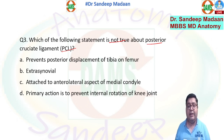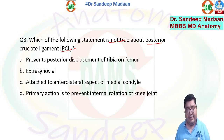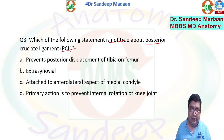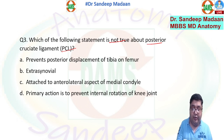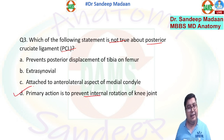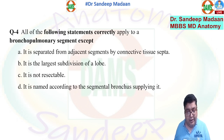Choice A — it prevents posterior displacement of the tibia — is true. Choice B — extra-synovial — is also true; it is intracapsular but extra-synovial, attached to the medial aspect of the lateral condyle of the femur, which is also true. The statement that its primary action is to prevent internal rotation is not true — D is the correct answer.